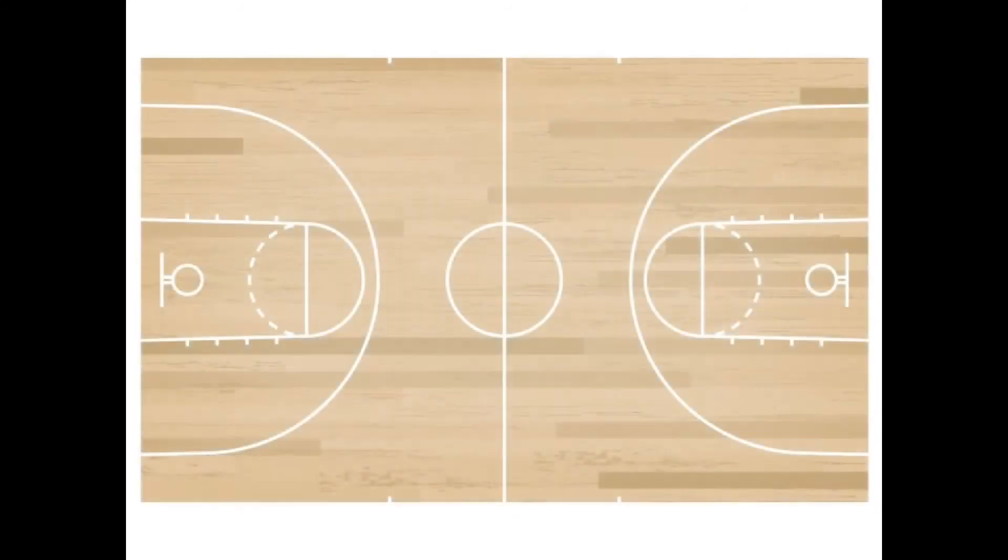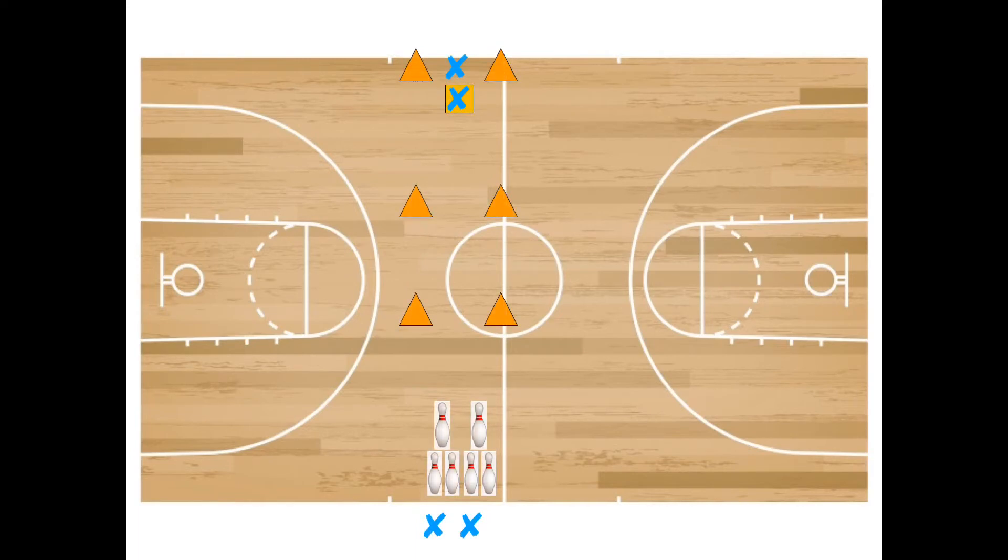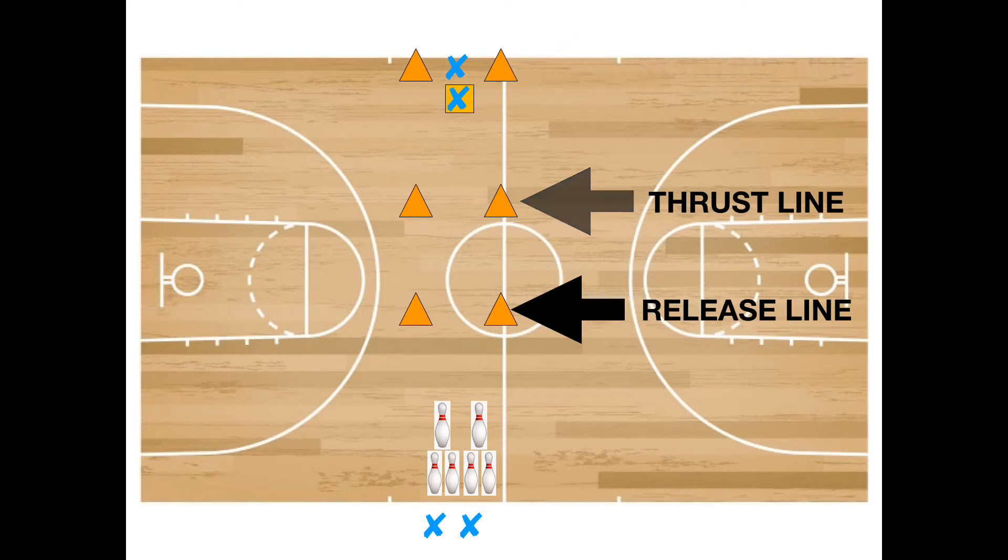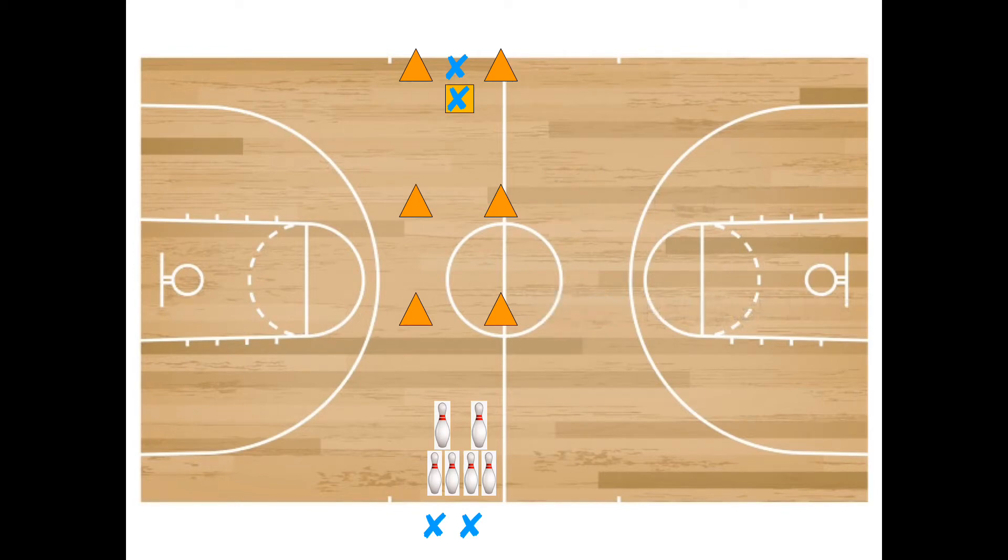When demonstrating this activity to the students, the teacher must point out the starting line, the thrust line, and the release line. The starting line is where you and your partner must start from. The thrust line is where you or your partner must stop pushing each other. And the release line is where you must throw the dodgeball.